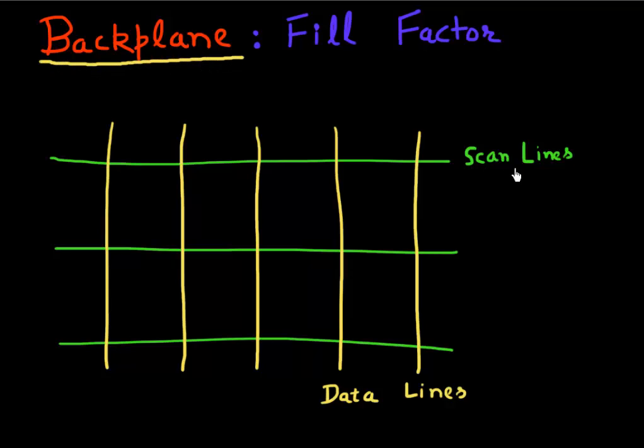If you look at this backplane, it consists of orthogonal sets of lines. These green lines over here are scan lines. And these perpendicular lines which are drawn in yellow are data lines. A good analogy if you want to derive from our study on memories is that these are similar to bit lines and word lines that you see on your flash or DRAM array.